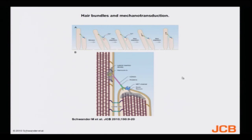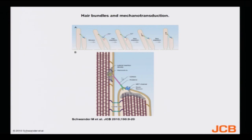These are the hair bundles and the mechanotransduction taking place. There is a stimulus — they move in one direction. In this situation you see everything moving towards the left. Once they move left, the calcium channel is pulled open, and then there is adaptation and they come back to their original position. If you follow this diagram carefully, the whole mechanotransduction will be very clear.